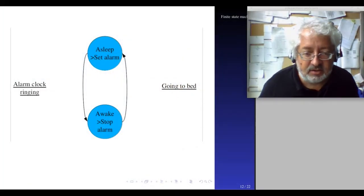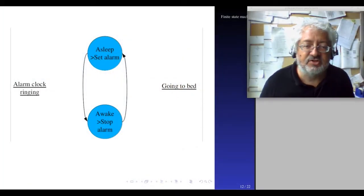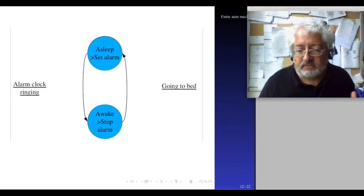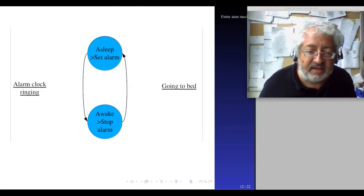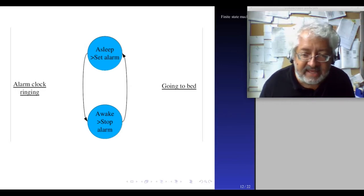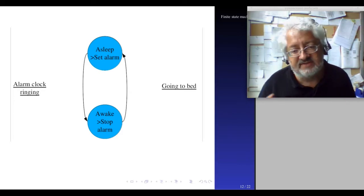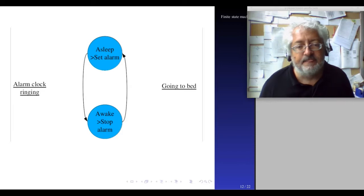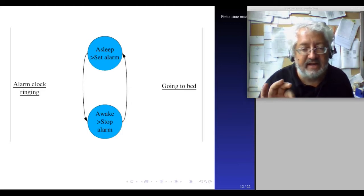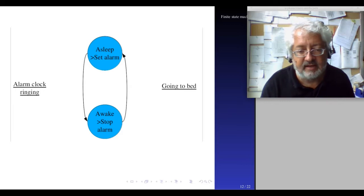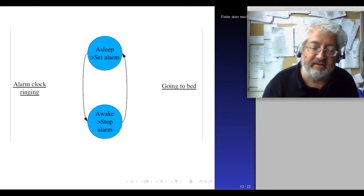We can have more complex such systems. Let me just briefly show you another. I could be asleep, for example, or awake. These are my two states, and then I have the transitions between states. So asleep, when the alarm clock rings, I take the transition, and then I become awake. And when I'm awake, and then I go to bed, after a while, I fall asleep.